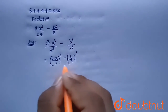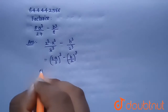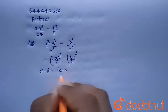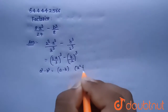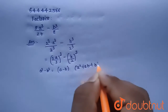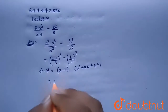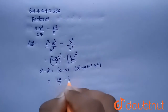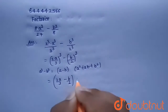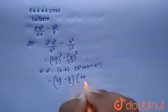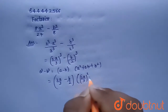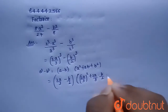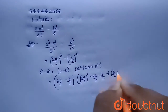Now it is in the form of A cube minus B cube, and we know the formula: A cube minus B cube equals A minus B into A square plus AB plus B square. So applying this formula, we can write it as (2A/3 − B/2) multiplied with (2A/3) whole square plus (2A/3)(B/2) plus (B/2) whole square.